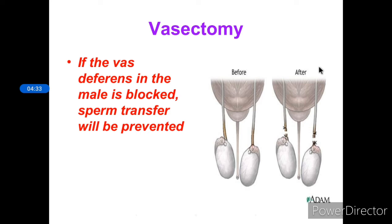Next is vasectomy. We already discussed that in the male reproductive system, sperms are produced in the testes and carried through a tube called the vas deferens. In vasectomy, the vas deferens in the male is blocked, so the sperm will not be transferred or carried. In this way, the meeting of sperm and egg can be avoided and pregnancy can be prevented. That is vasectomy.